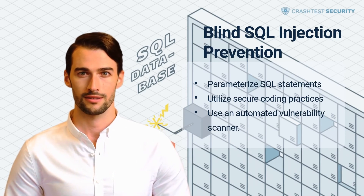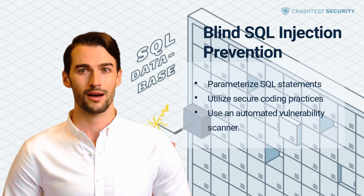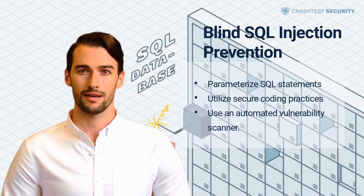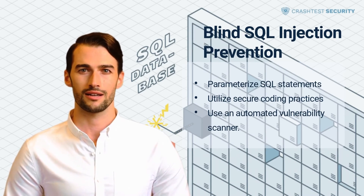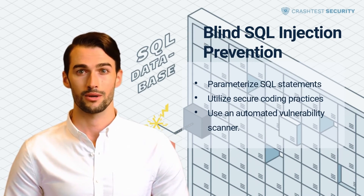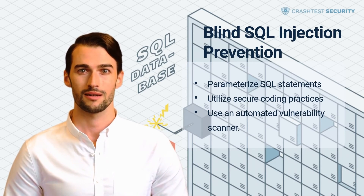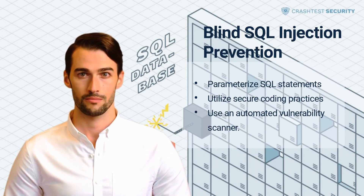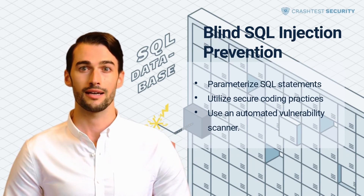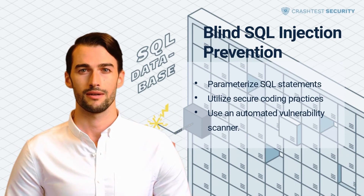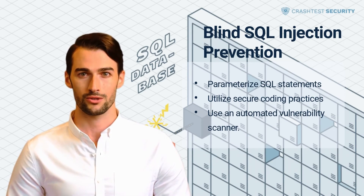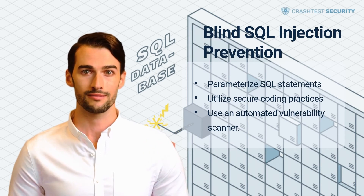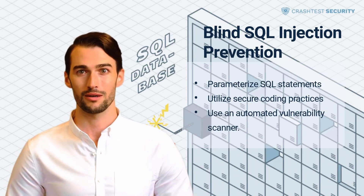Utilize secure coding practices. Use your chosen web platform's built-in injection prevention mechanisms to protect the application against blind SQL attacks. The OWASP SQL Injection Cheat Sheet includes multiple prevention and mitigation measures for blind SQL flaws. Developers should ensure proper input validation at query input locations. Additionally, in database systems that support stored procedures, developers can use them to define expected queries, avoiding malicious user-controllable inputs.